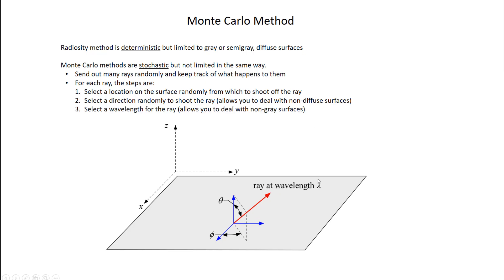Then you select the wavelength of the ray, which also tells you the energy of the ray. This is where it's very easy to simulate non-gray surfaces — you can select wavelengths not consistent with a black surface. Maybe there's a higher preference toward low wavelengths if a surface has higher emissivity at low wavelength bands. The probability distribution for this step lets you handle any emissivity as a function of wavelength.